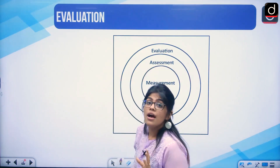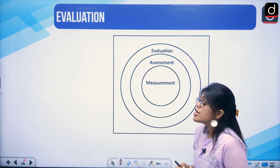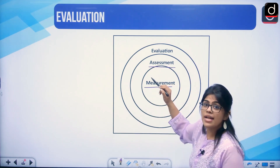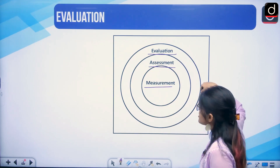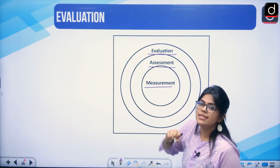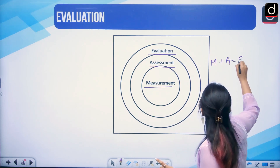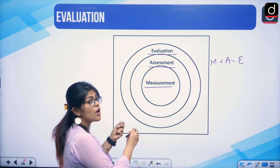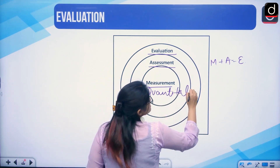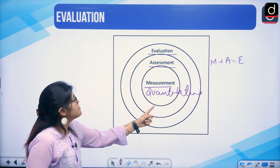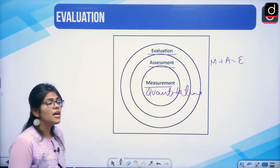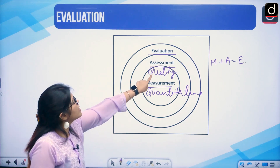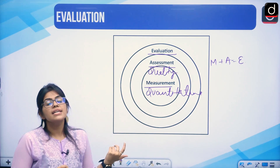Let us know more about evaluation. Evaluation is a broader term. Under evaluation we have measurement and assessment — so measurement plus assessment gives you evaluation. Measurement is when you calculate the quantitative aspect of a child. While qualitative aspects are also important — when the qualitative aspect is measured, you call it assessment.